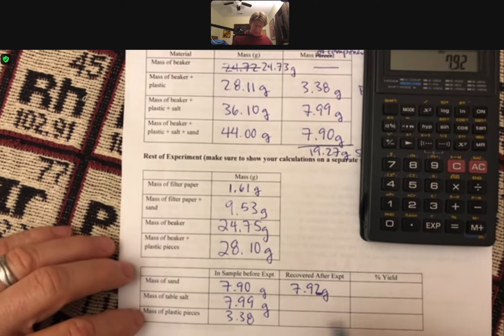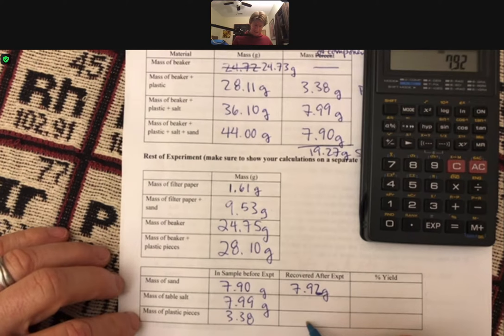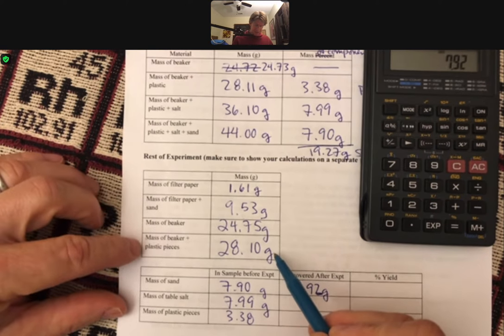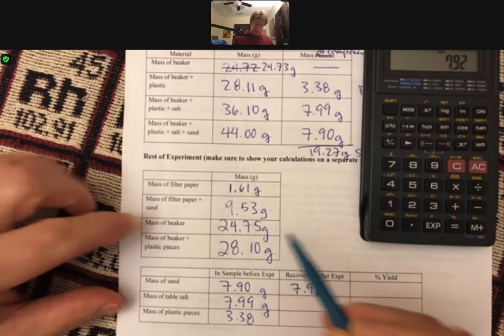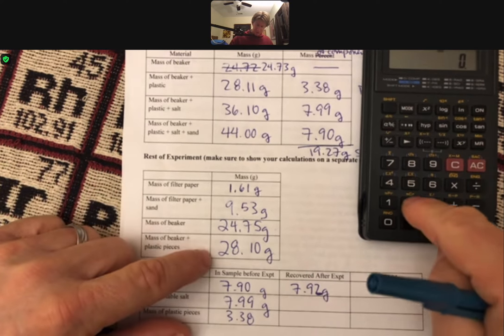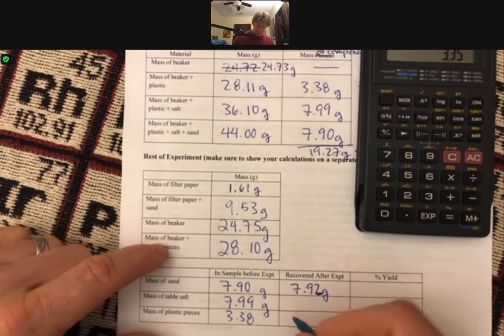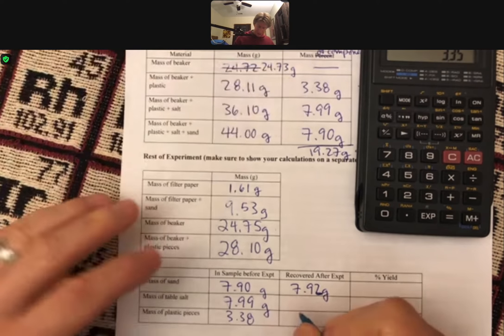That's a 2. And then I can get my mass of plastic pieces. And that's going to be beaker plus plastic pieces minus beaker. So 28.10 is 24.75, 3.35. So pretty close.